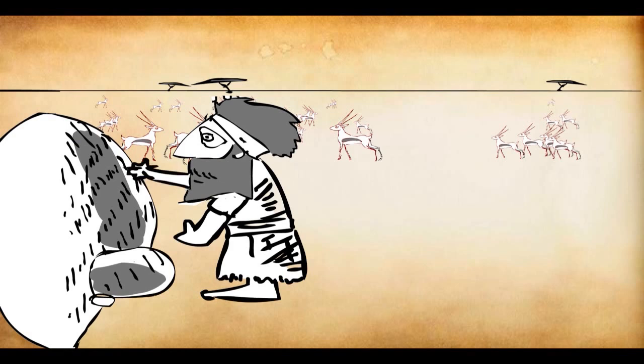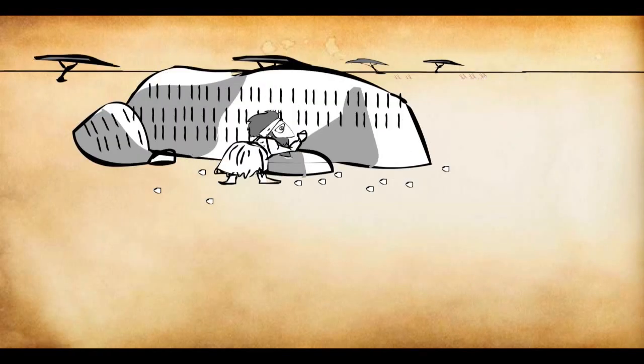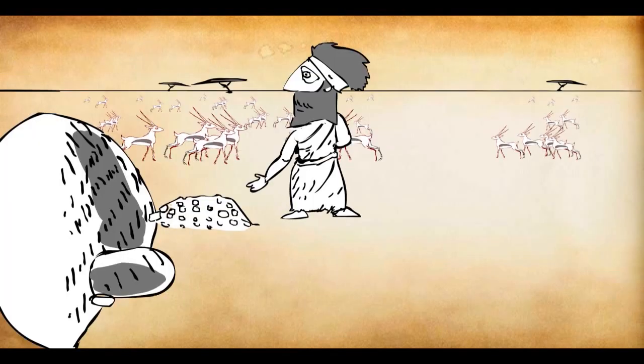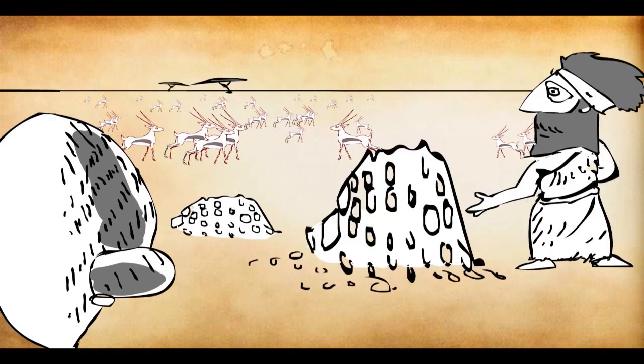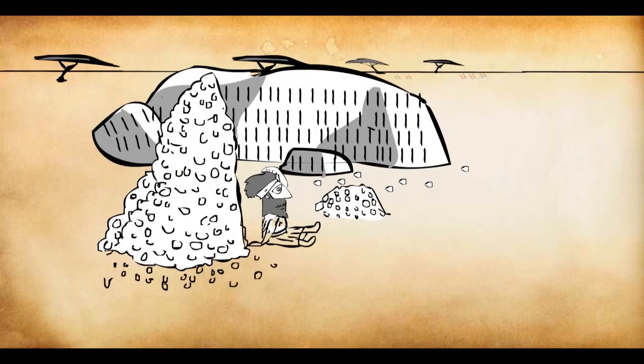So for larger numbers, they started using tally marks. However, that too wasn't sufficient for large numbers. So they started using stones or pebbles to represent numbers. This too was not always possible. Early man was still far away from numbers. But at least now they could understand by looking at a pile of stones that larger the pile, more the number of animals.